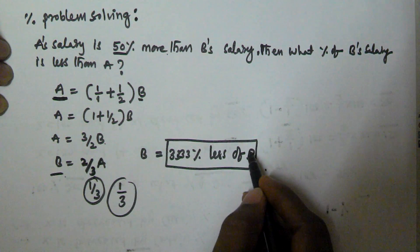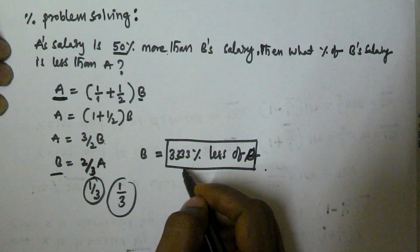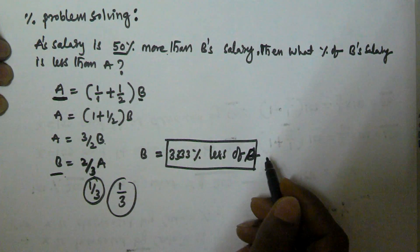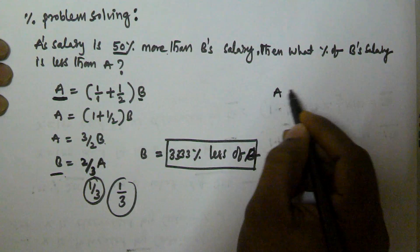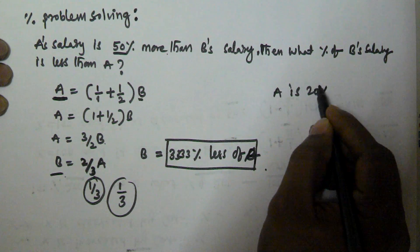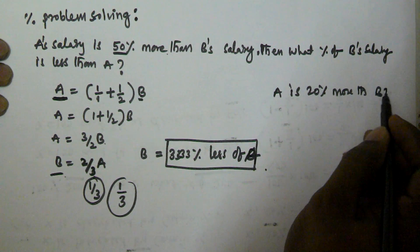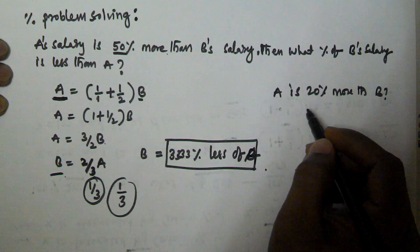That means B's value is 33.33% less than A's value. Let's see another example. So A's salary is 20% more than B. Then what percentage of B is less than A?